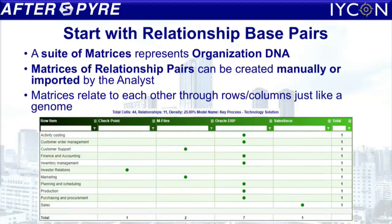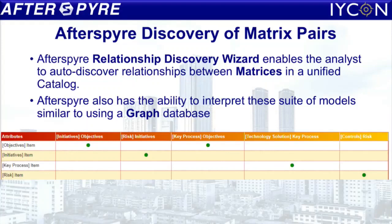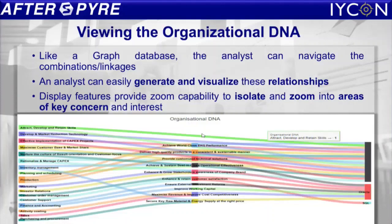These all represent the organizational DNA together. These can be created manually or they can be auto-discovered using the relationship discovery wizard, whereby we can import and create a unified catalog from different independent categories. Afterspire uses semantic matching to match and merge all of this into the organizational DNA. You can generate and visualize these relationships, and we can actually zoom in to areas of key concern and interest, which I will demonstrate.